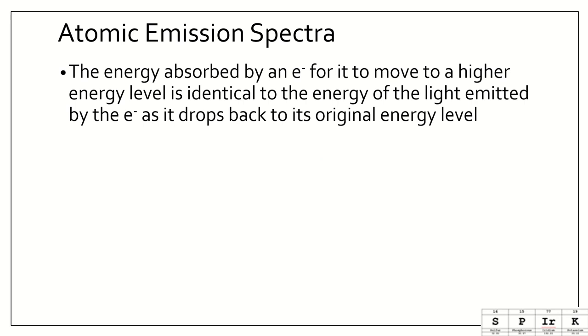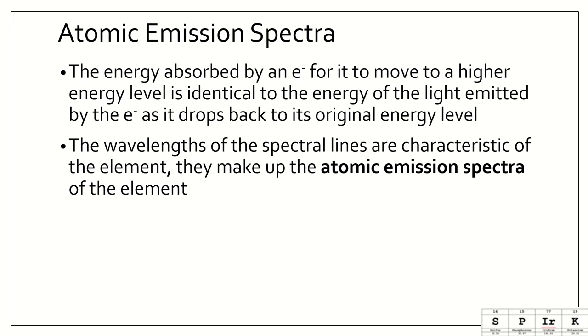The energy absorbed by an electron for it to move to a higher energy level is identical to the energy of light that's emitted by the electron as it drops back to its original energy level. The wavelengths of the spectral lines are characteristic of the element, that they make up the atomic emission spectrum of that element. No two elements have the same emission spectra. So, the one we were just looking at for helium, that is specific to helium. No other of the 118 elements have that atomic emission spectra.